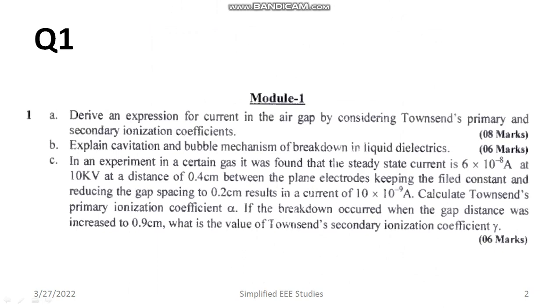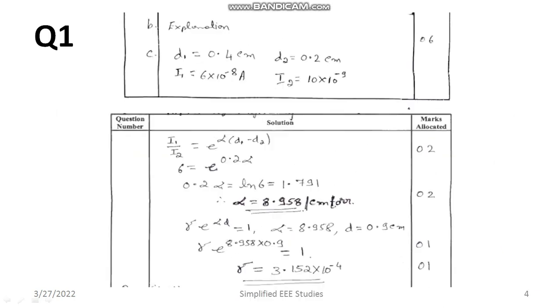Regarding the problem, first of all you have to write the given data like this. See the given data, what are the data they provided: D1, D2, I1, I2. From this you can compute alpha, the primary ionization coefficient.